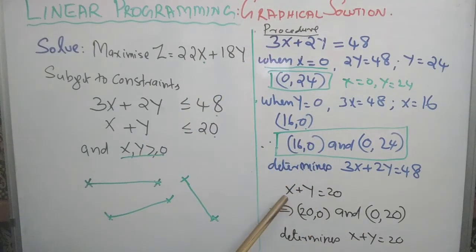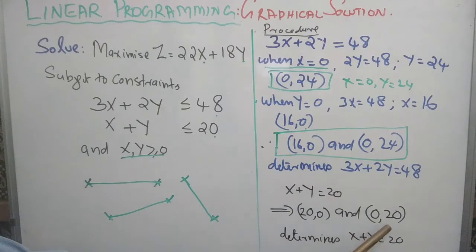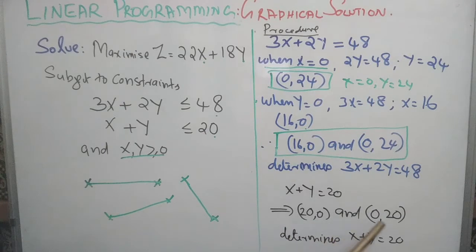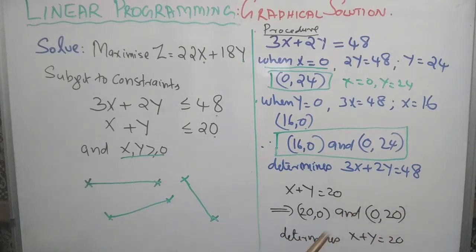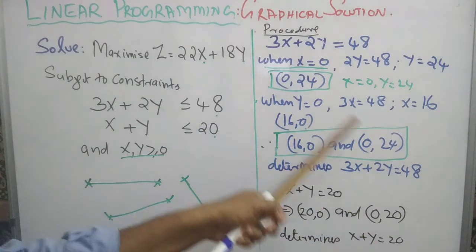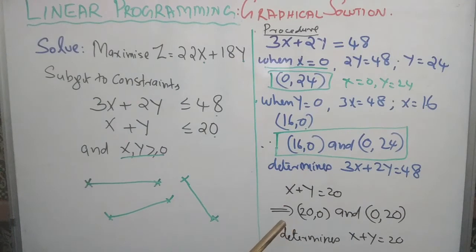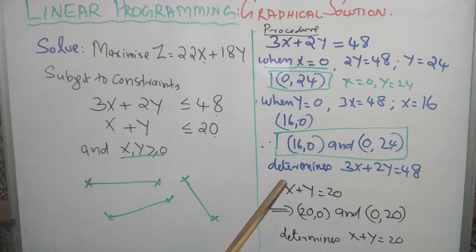Similarly, for the constraint x plus y equals 20: put x equal to 0 to get y equals 20, and put y equal to 0 to get x equals 20. These two pairs of coordinates determine the line x plus y equals 20, and using these we determine the feasible region for the feasible solution.